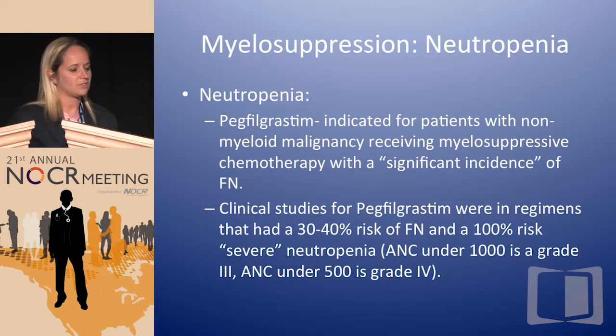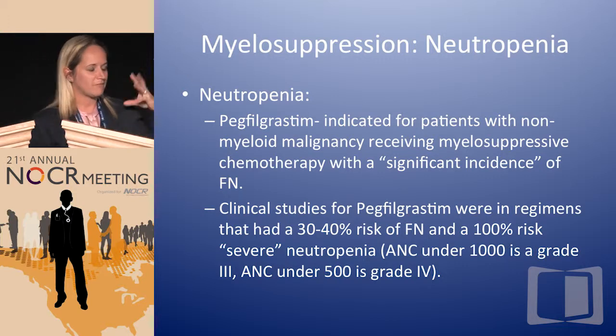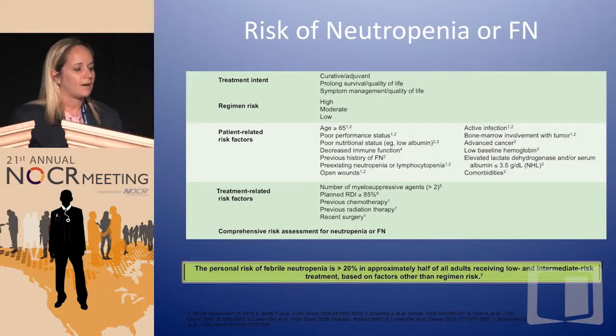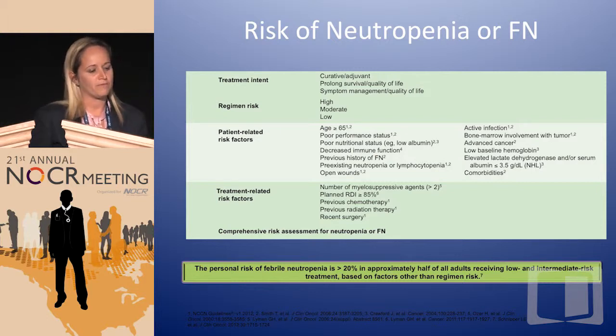Pegfilgrastim is one of the drugs that is approved. If you look at the package insert, it is approved for non-myeloid malignancies receiving myelosuppressive chemotherapy with a significant incidence of febrile neutropenia. You could really argue for a lot of regimens, especially based on risk factors. Besides the toxic chemotherapy, things like age, poor performance status, and poor nutritional status all pile up and increase your risk.